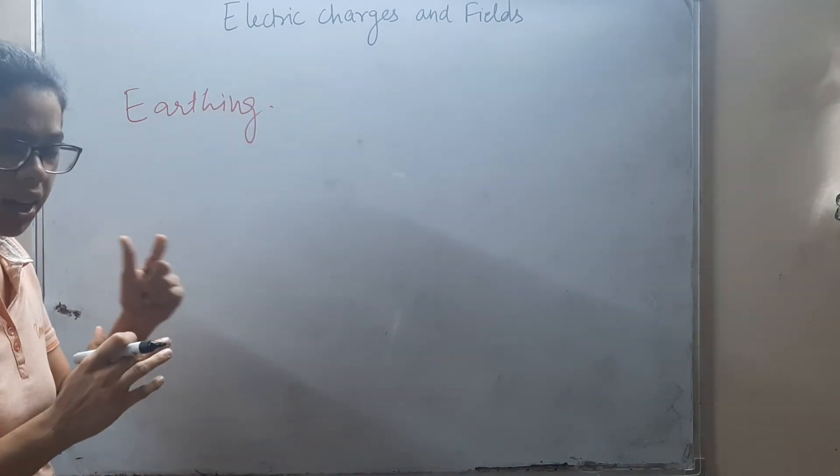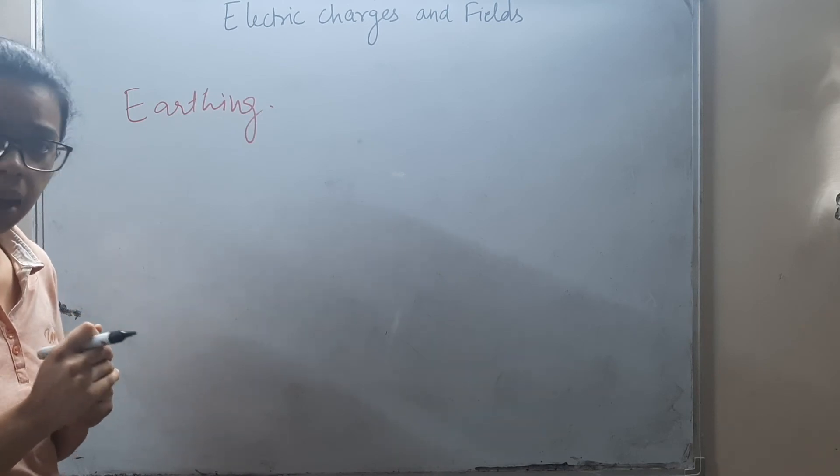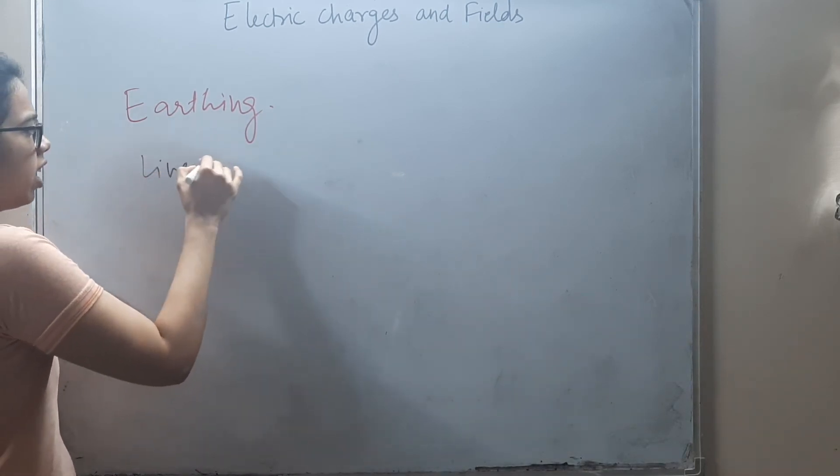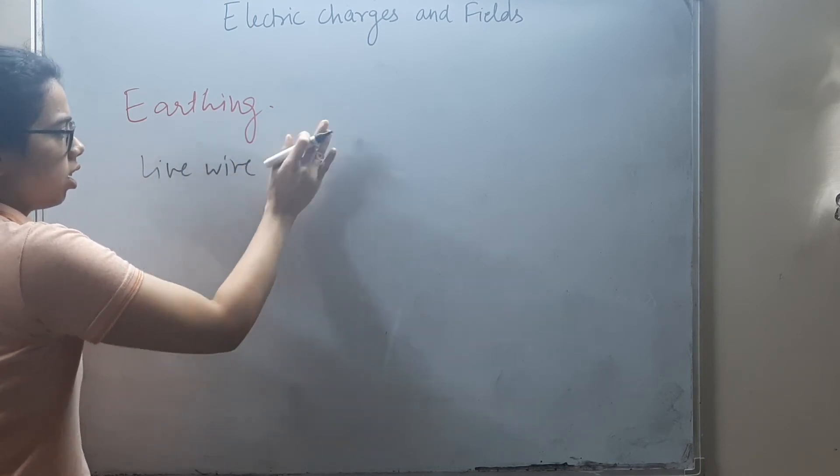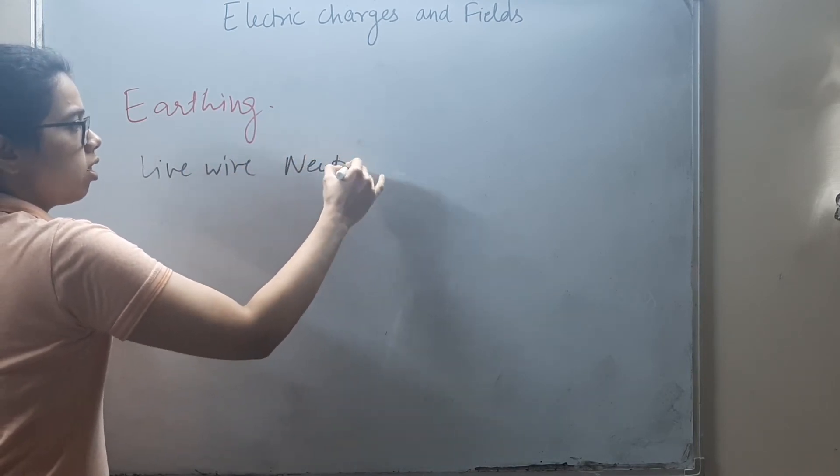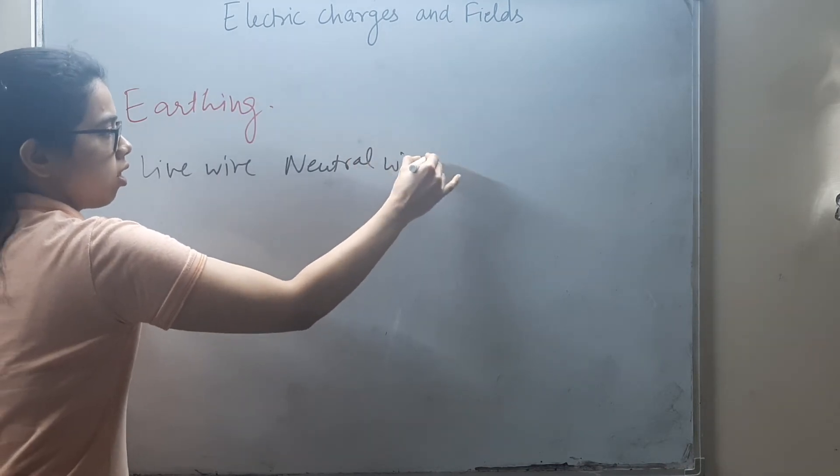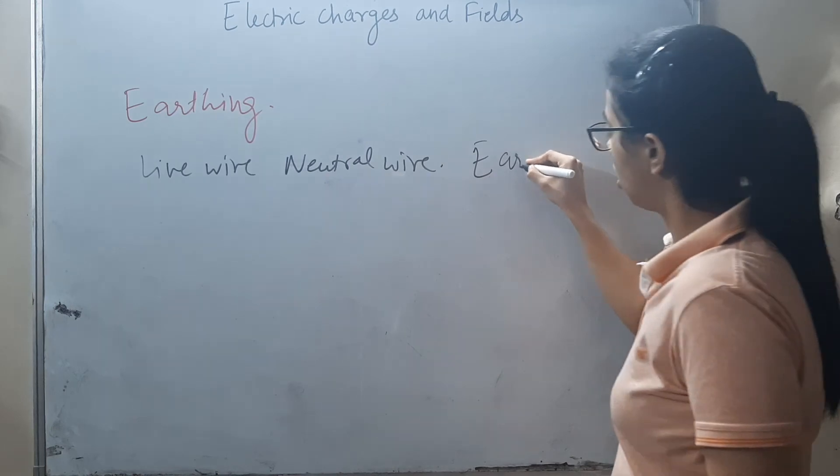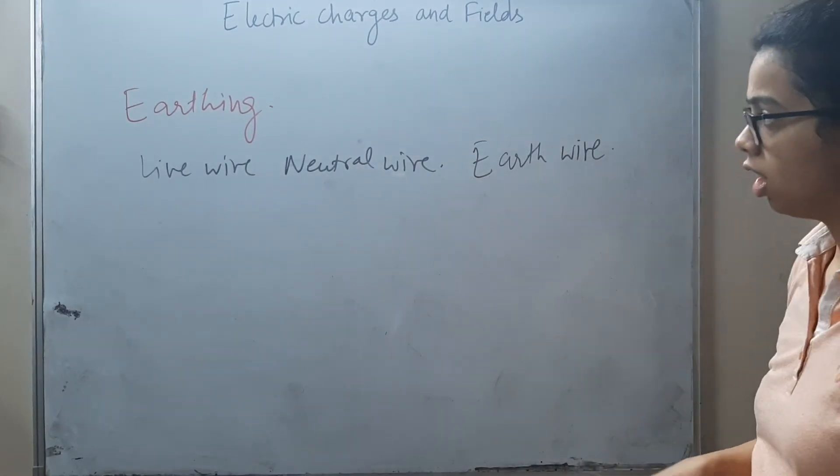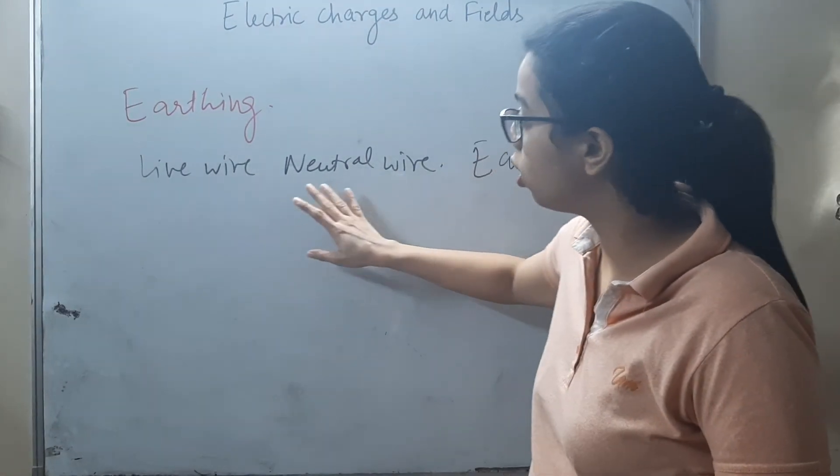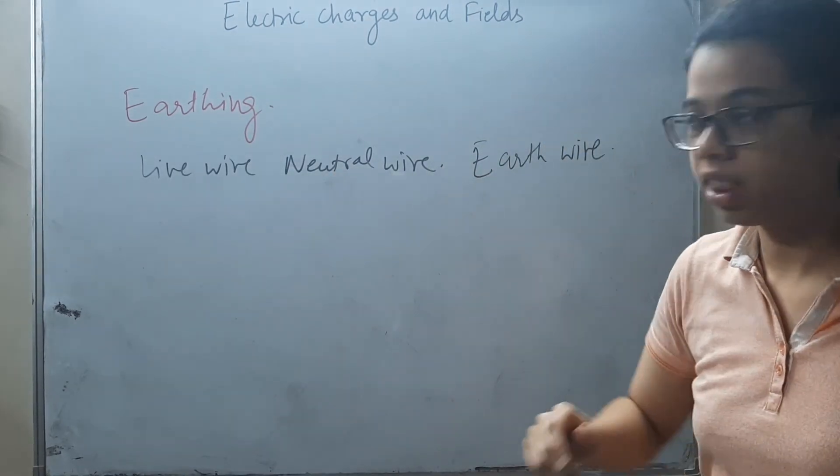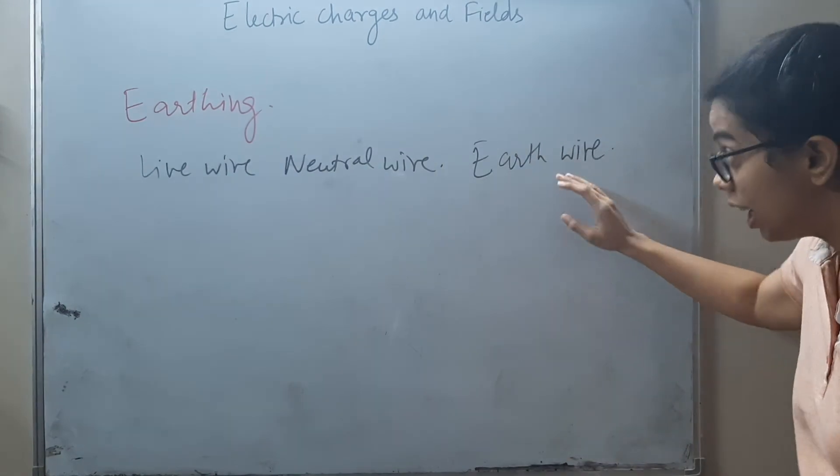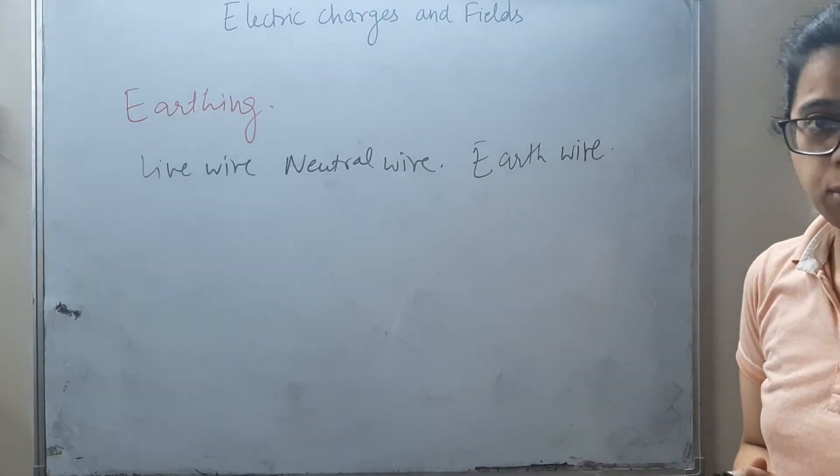As we have seen, our electrical appliances have three wires: live wire, neutral wire, and the third wire is earth wire. So the live wire and neutral wire carry current from the power station. But what is the function of earth wire?